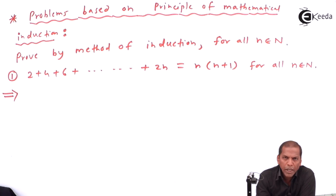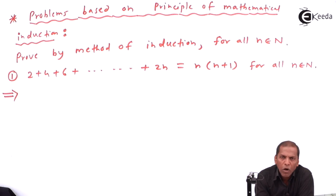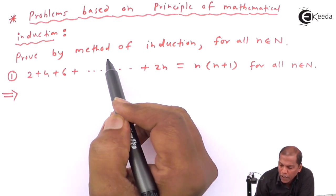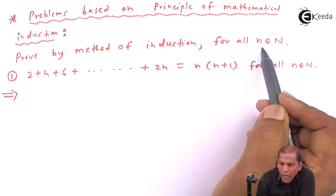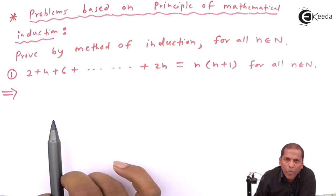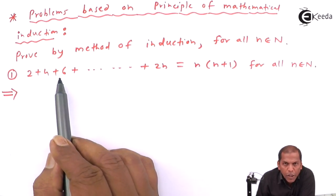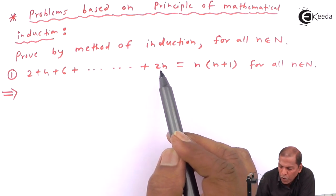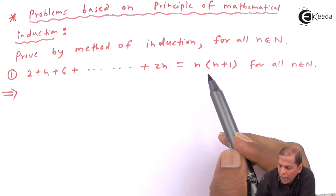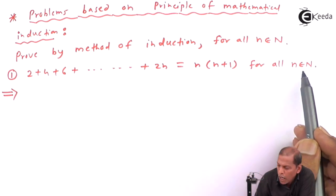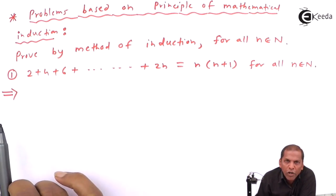Hello friends. Now we see the problems which are based on the principle of mathematical induction, from the chapter on method of induction and binomial theorem. The problem is to prove by method of induction for all n belonging to the set of natural numbers: 2 plus 4 plus 6 plus dot dot plus 2n is equal to n(n plus 1), for all n belonging to the set of natural numbers.